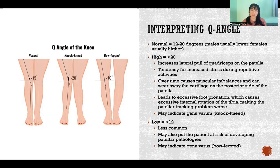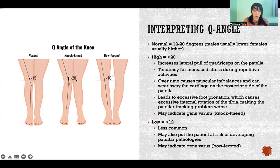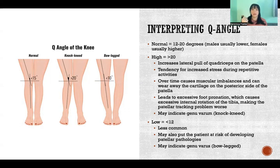A high Q angle could also indicate genu valgum, or knock-knee position, like we see in the picture here. So in some cases it's a matter of pulling the patella too far, but in some cases it's a matter of the knees coming too close together, and that makes the angle higher.